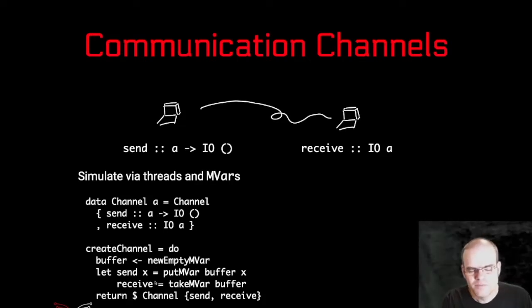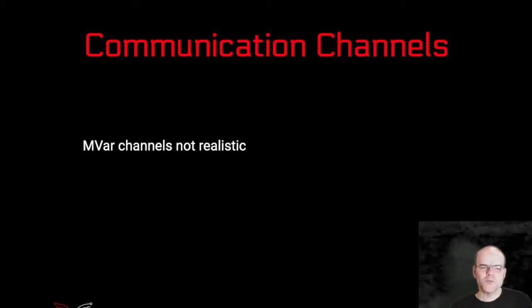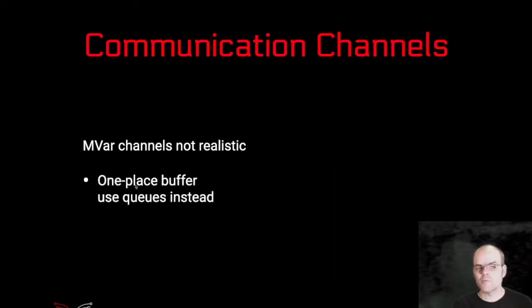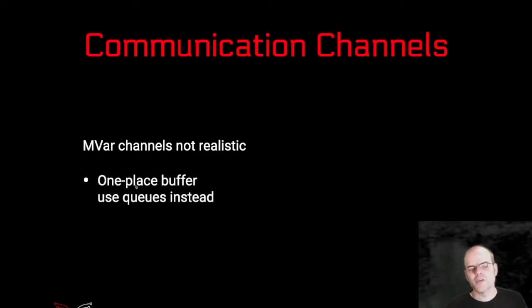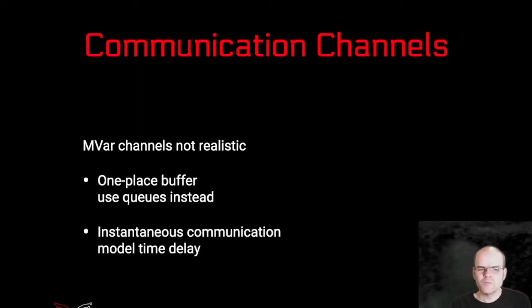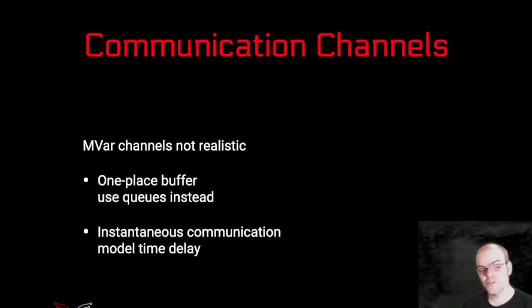Of course, that's not particularly realistic, and you can add more realism to the simulated channel. For example, a mutable variable is only a one-place buffer — once you've sent one message, the channel blocks until the other side has read it, which is not typically what happens in a network. So you can use a bounded queue instead. Also, that's basically instantaneous communication — you put something into the variable and at the same time the other computer can read it. So in order to make it more interesting and more realistic, you can model the time delay between those two computers.